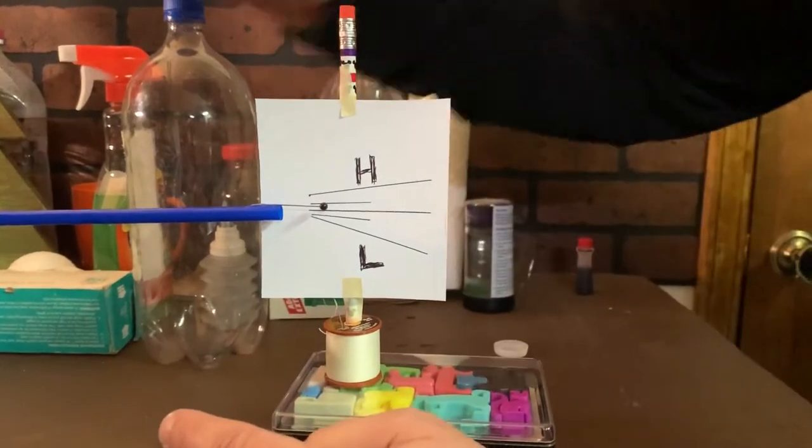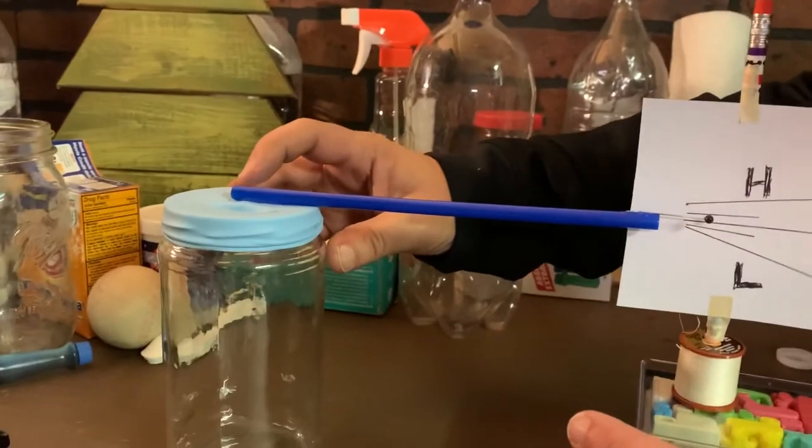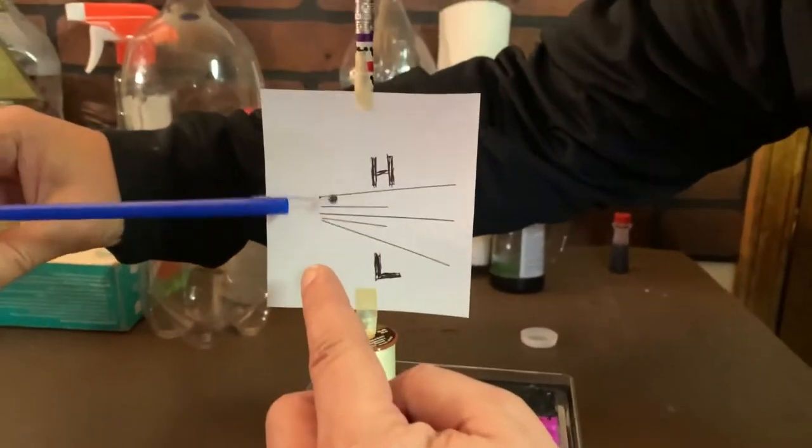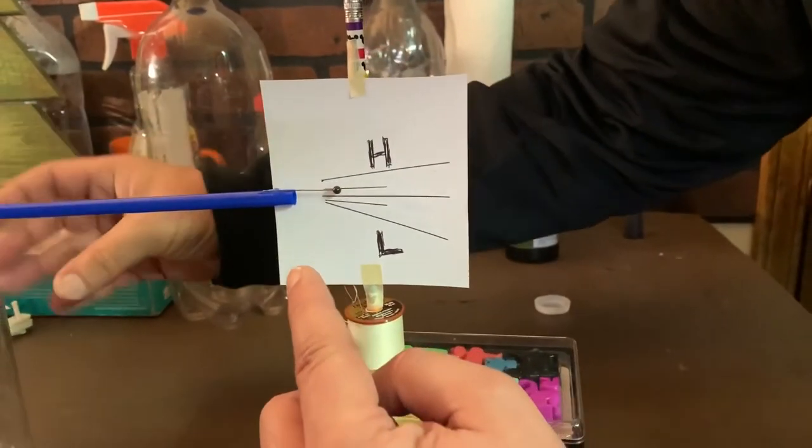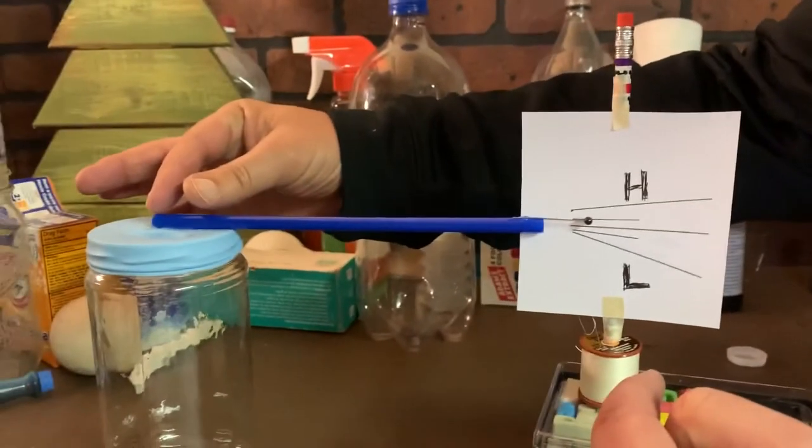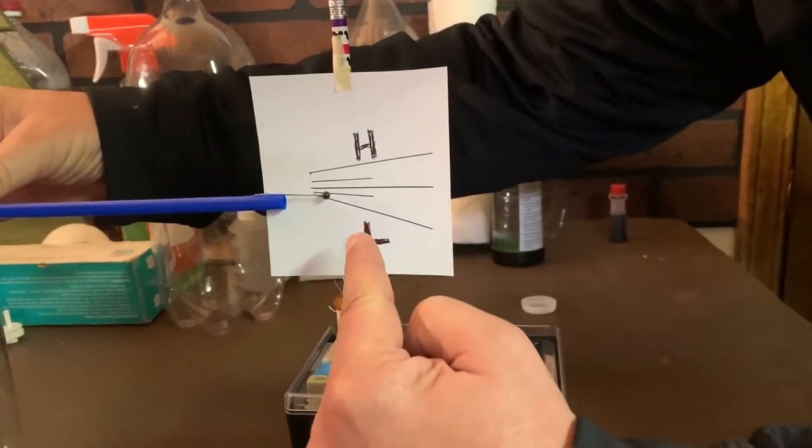So what happens is that the atmosphere, when there's high pressure, it pushes down on the balloon and then watch what the needle does. The needle will rise. When there's lower pressure, the pressure inside the jar will be greater and it will pull the needle down toward low pressure.